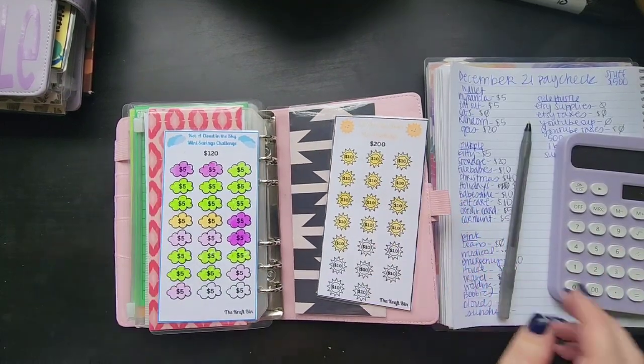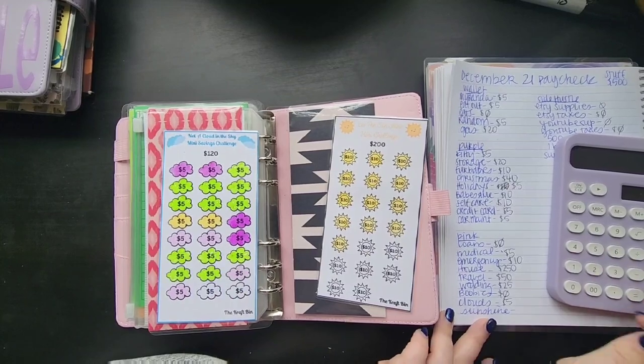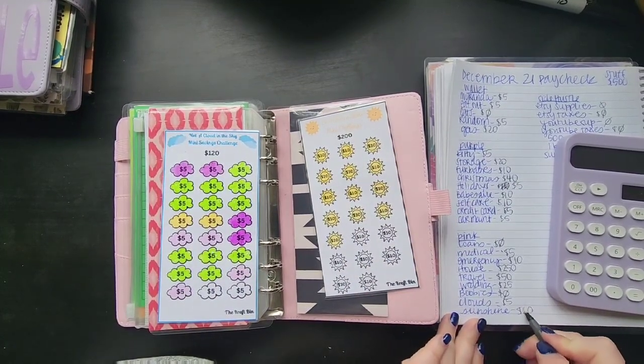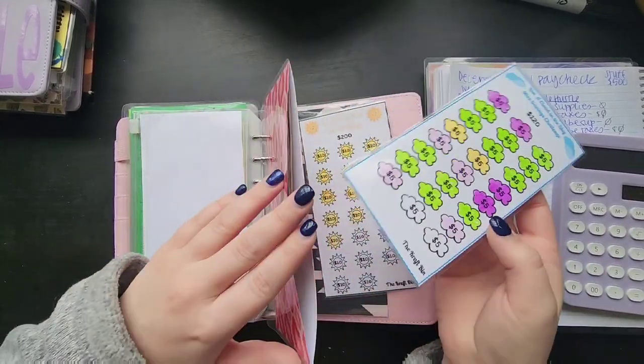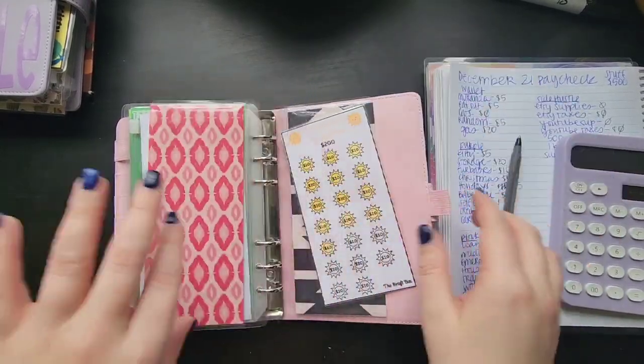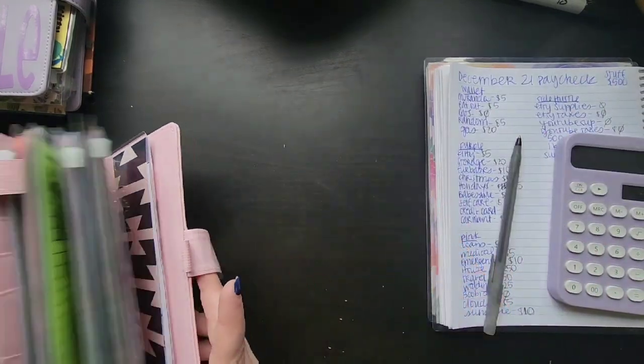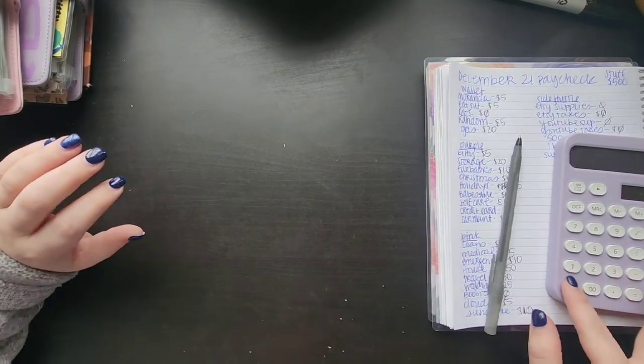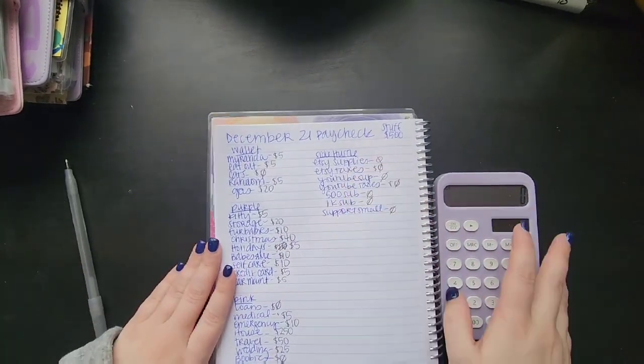So we're at 15 and then we're going to do one cloud and one sunshine. So one cloud at five and then one sunshine at ten, and that should be five hundred dollars. I wish I was able to finish off this but it's okay, we'll finish off at the beginning of the new year.